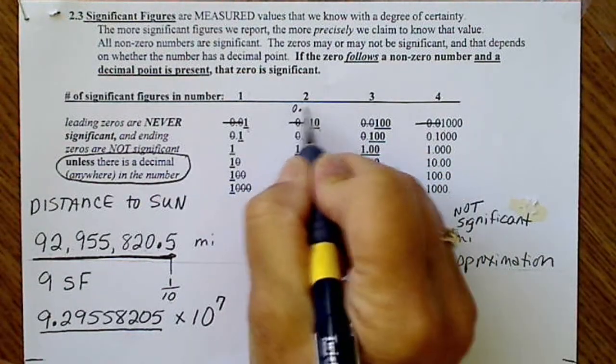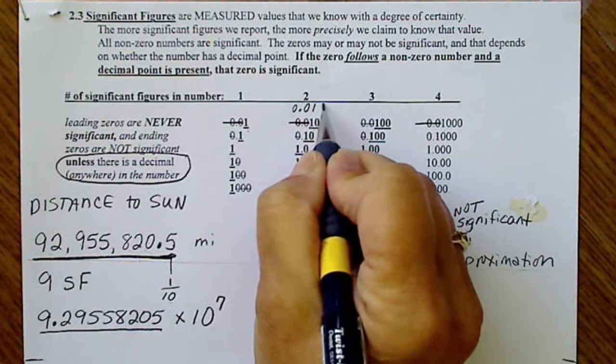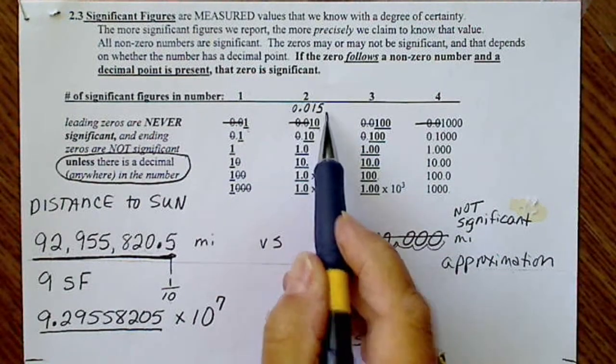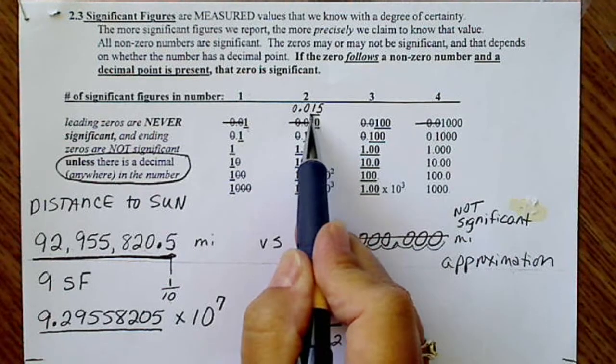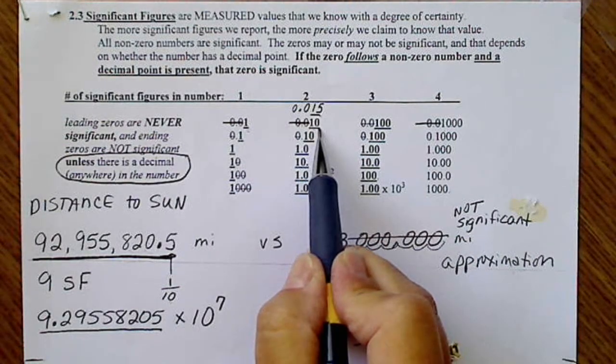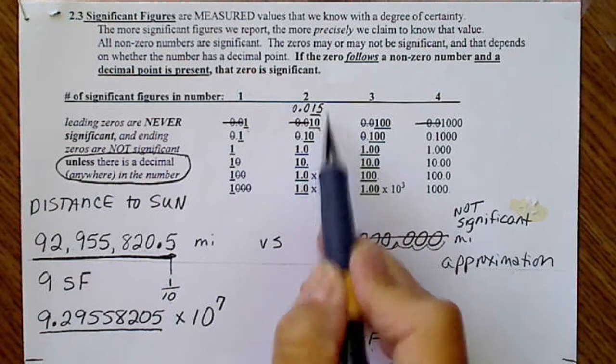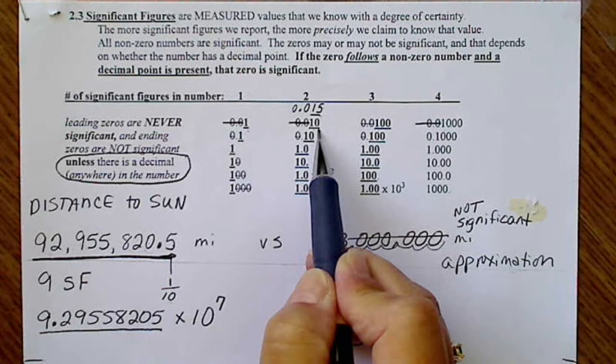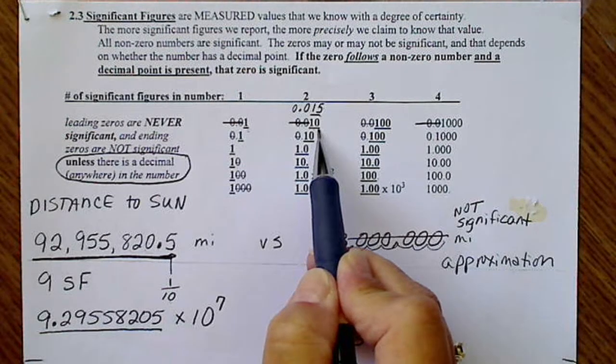If we had this value instead, 0.015, both of those numbers would be significant. If we see a zero there, that means we know this value out to this value of 10 precisely.